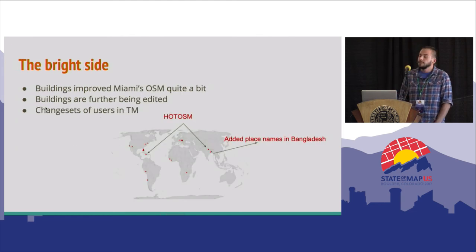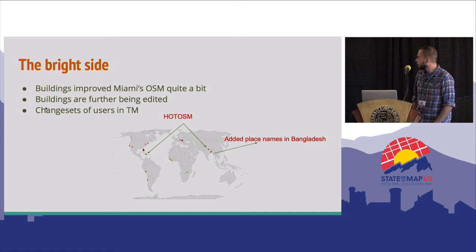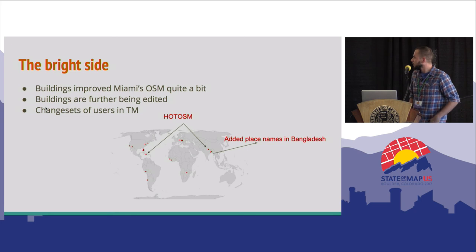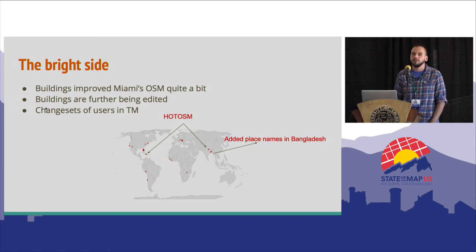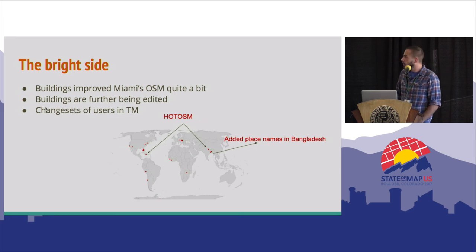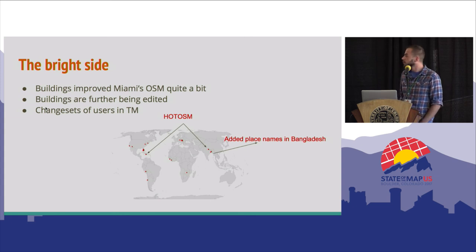On the bright side, there were several good examples. I looked up all the users in my tasking manager and accessed their changesets to see the spatial pattern. Some of them who got to know OpenStreetMap through this import took the time and effort to map in their home regions. There was a guy from Bangladesh, some people participated in humanitarian projects, and also some of them scrolled back to their hometown and added some buildings, which was pretty good to see.